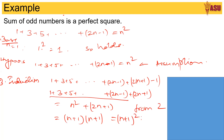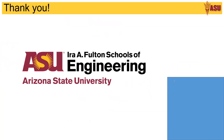So we have proved that it holds for n plus 1, and thus the rule that the sum of odd numbers is a perfect square is proven. That's it for mathematical induction. For more such examples, see your textbook and the exercises at the back. Thank you so much.